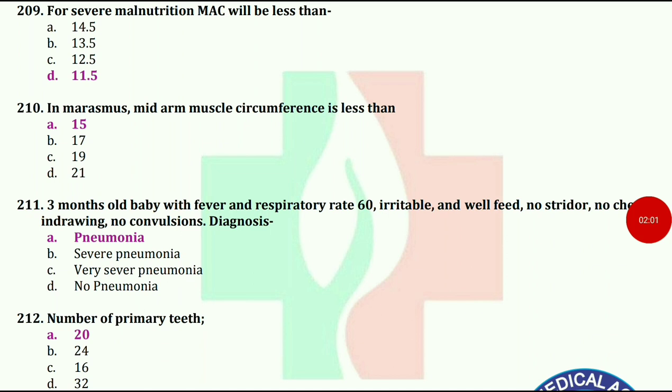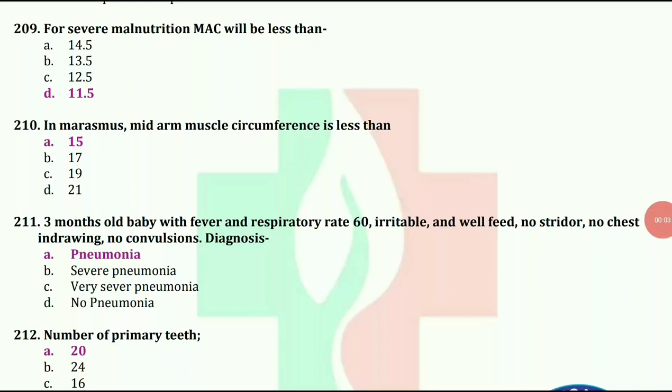For severe malnutrition, MAC will be less than 11.5. In marasmus, mid-arm muscle circumference is less than 15.